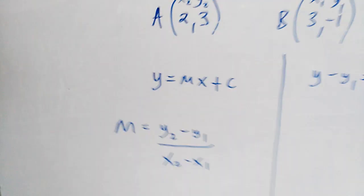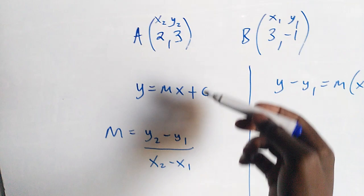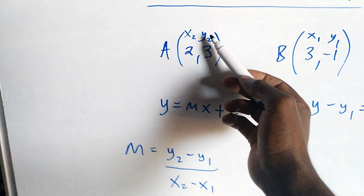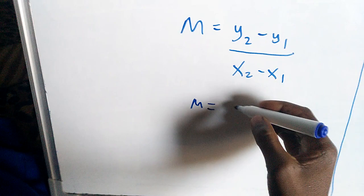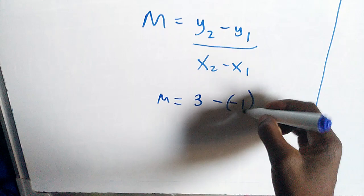Here are the two coordinates, A and B. So we have the y2, y1, x2, x1. We'll just substitute. Y2, we are taking away y1, dividing by x2, we are taking away the x1.